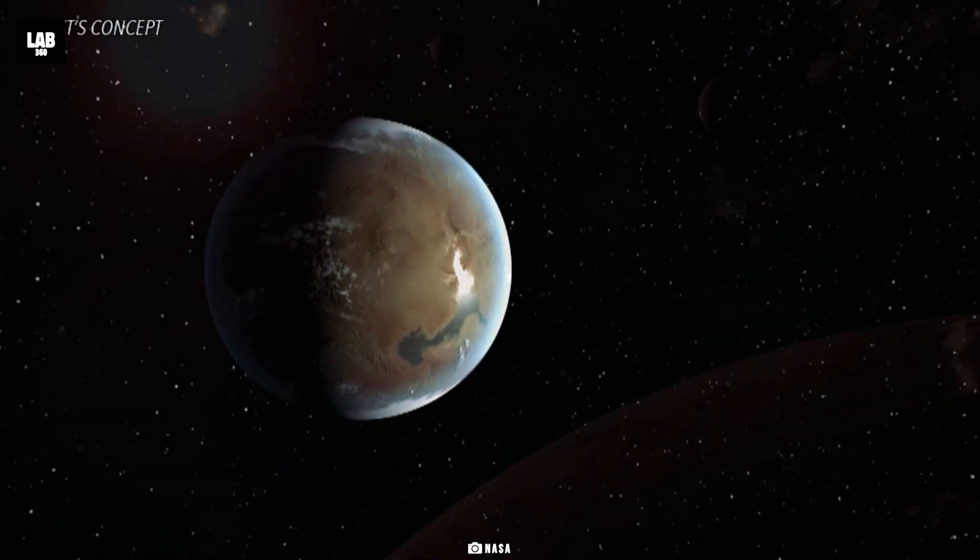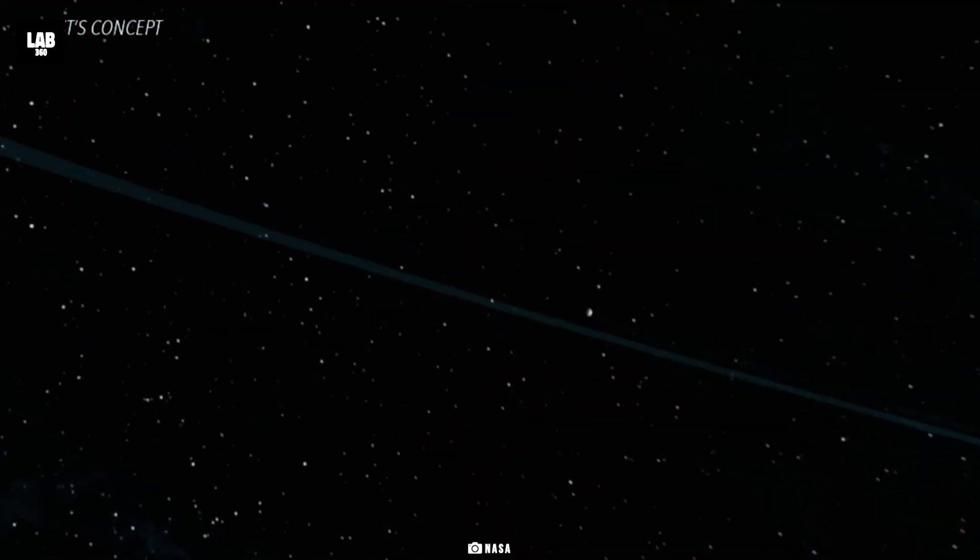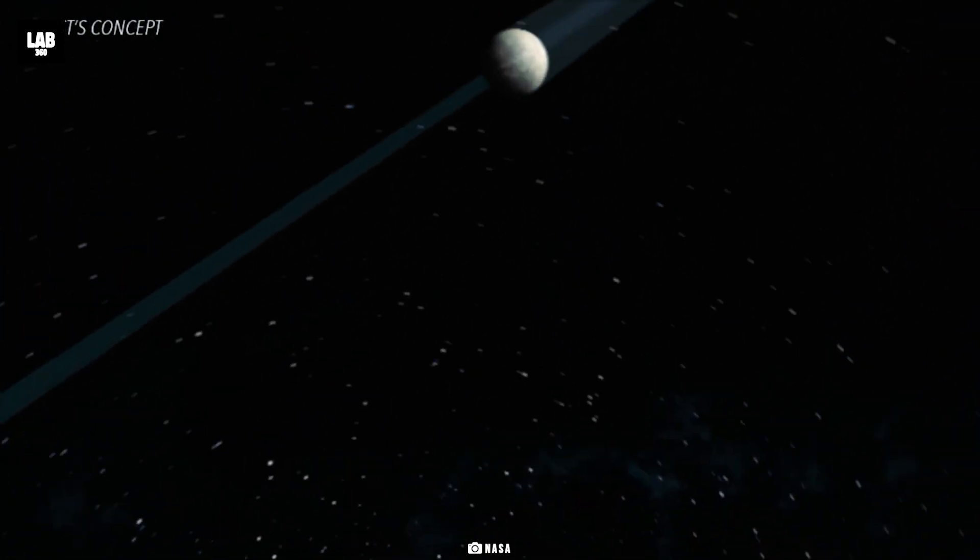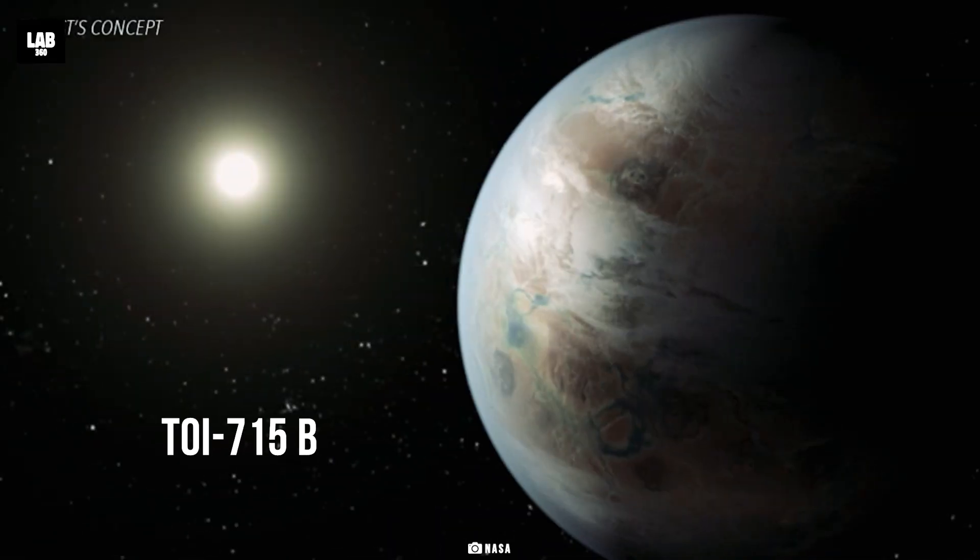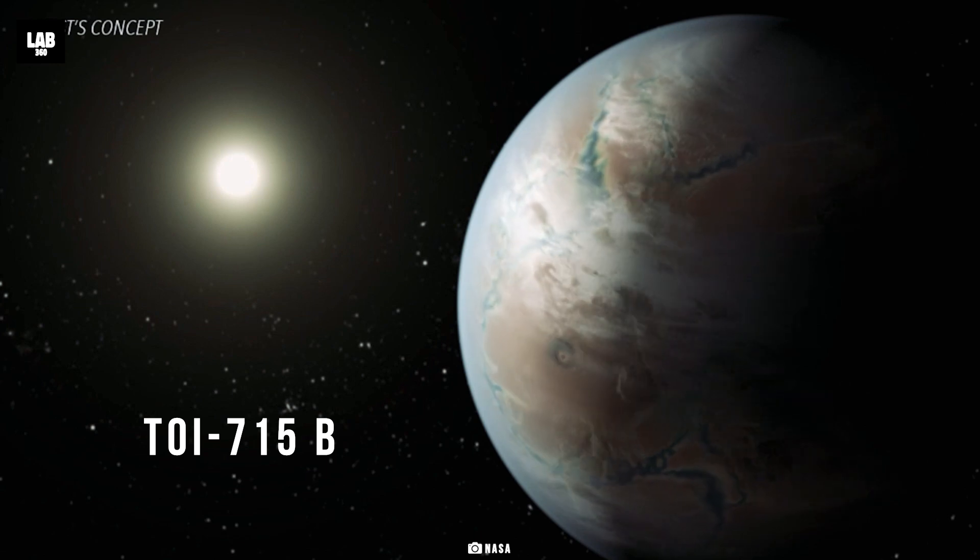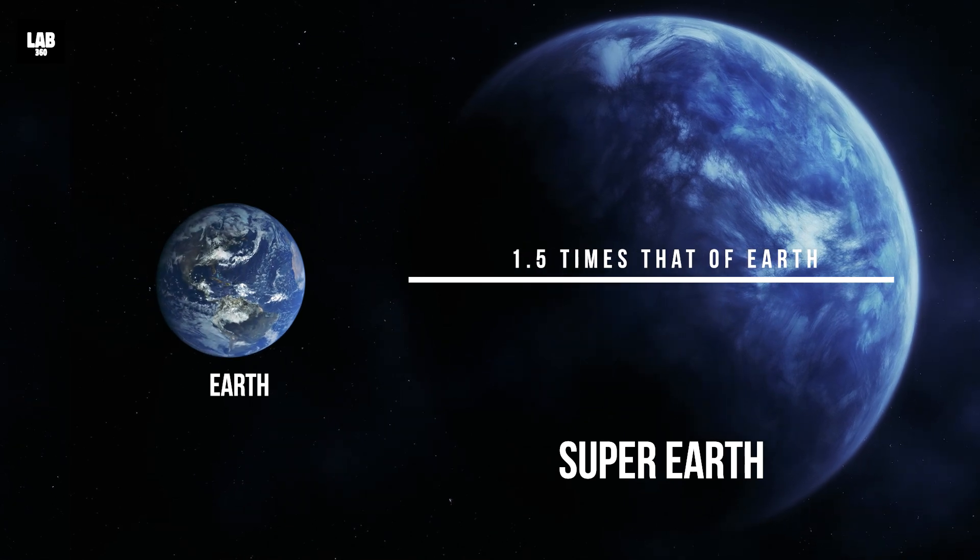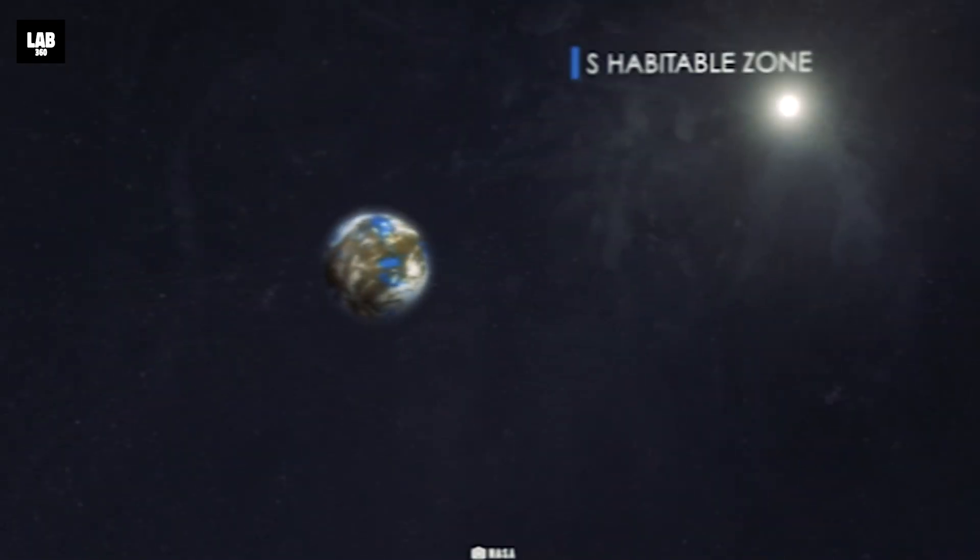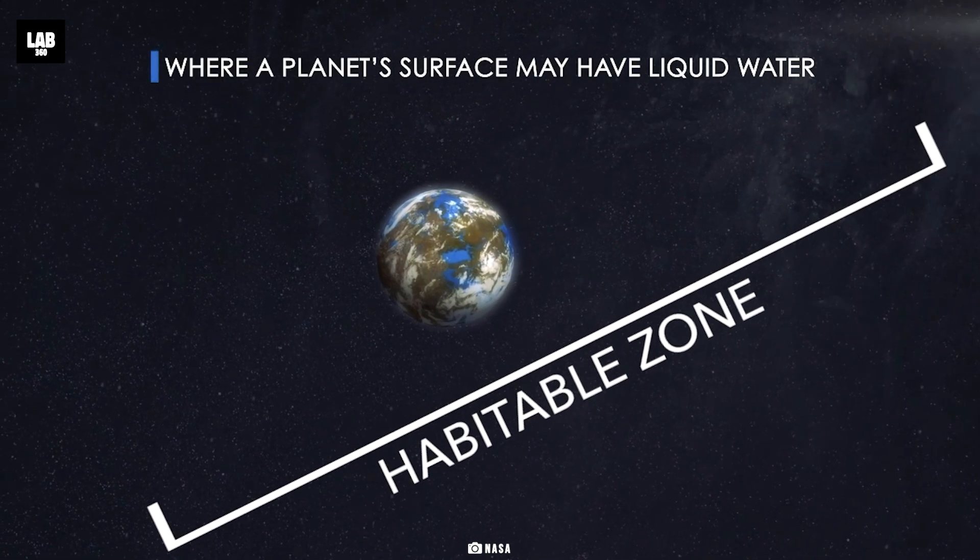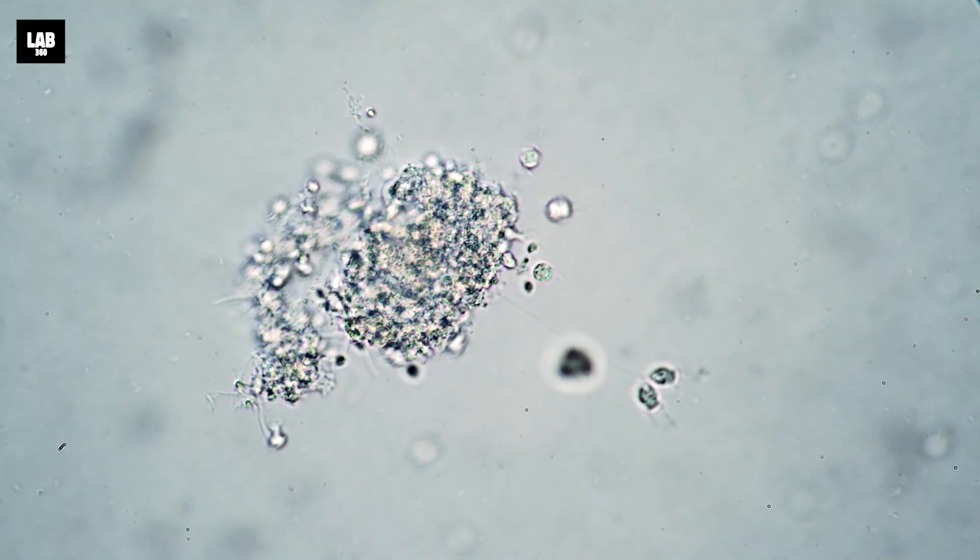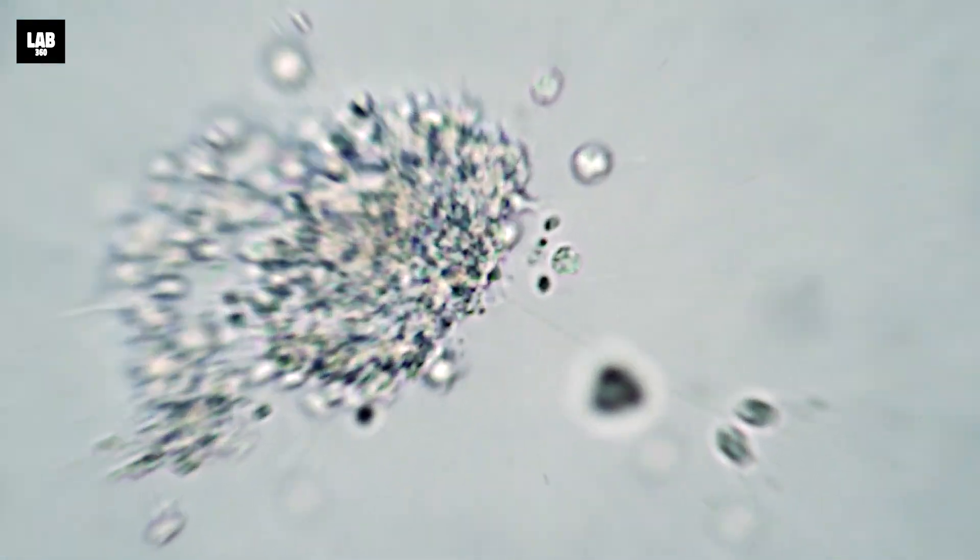In its quest to search for exoplanets like ours, TESS has spotted a super Earth planet orbiting in the habitable zone of a relatively nearby red dwarf star, just 137 light years away from Earth. This exoplanet has been named TOI-715 b. It's called a super Earth because it has a width around 1.5 times that of Earth. It is in the region around its star where liquid water would be able to survive without boiling or freezing, called the habitable zone.